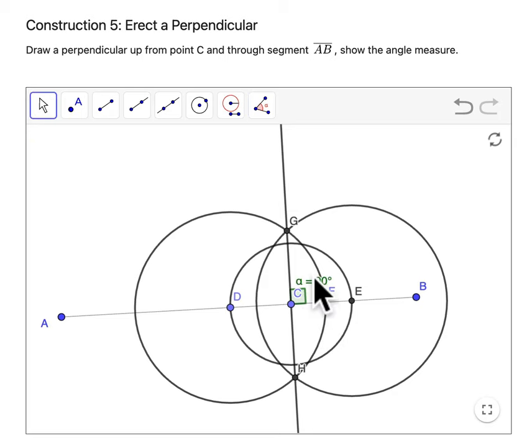And again, GeoGebra is dynamic. All of the black points are based on other constructions, so you can't move them directly.